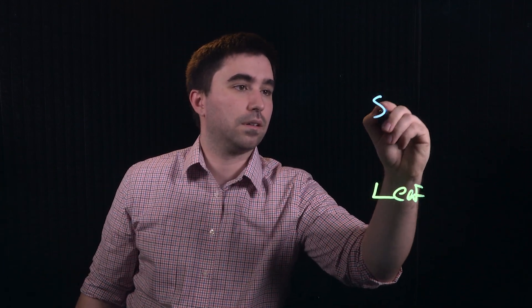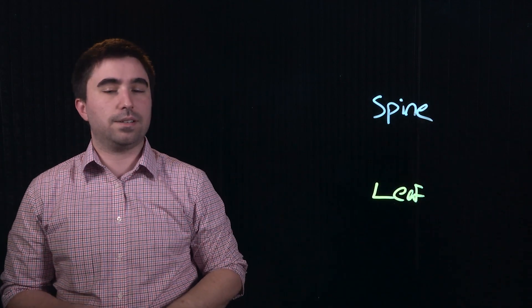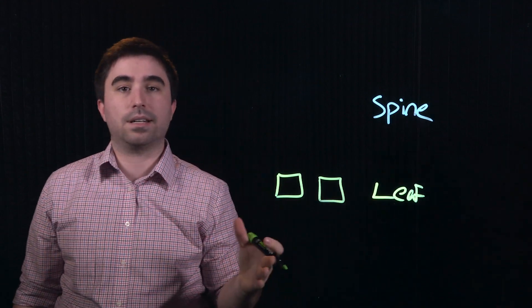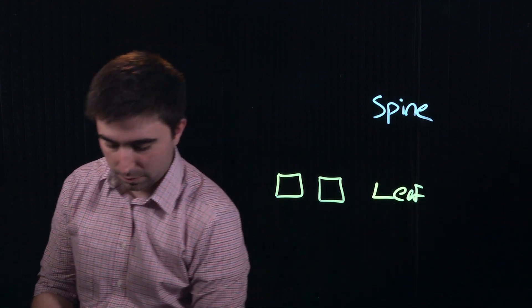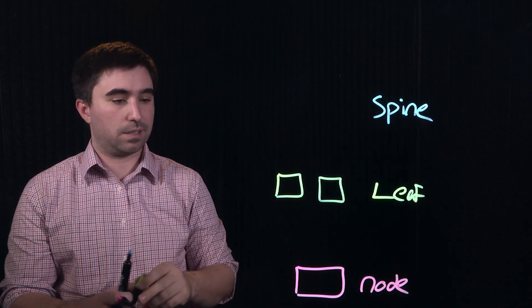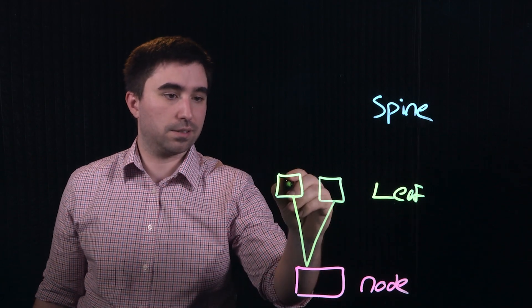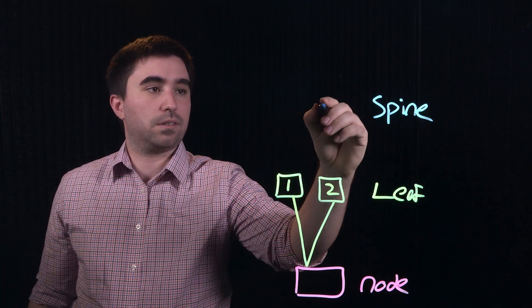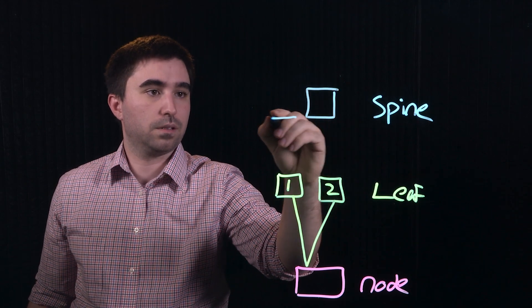Now we're going to talk about leaf and spine networks. In contrast to a three-tier network, a leaf and spine network has two different levels: a leaf level and a spine level. The leaf level, much like the access layer on a three-tier network, is composed of at least two switches. This provides redundant connectivity to the Nutanix architecture. If we have a single Nutanix node, it needs to be redundantly connected to the rest of the network, so we'll have at least two cables connecting these two different layers. We've got leaf one and leaf two. The leaf layer has to connect to the rest of the network as well, so it connects to what's called the spine layer, which is typically at least two switches.